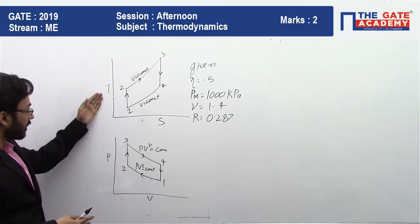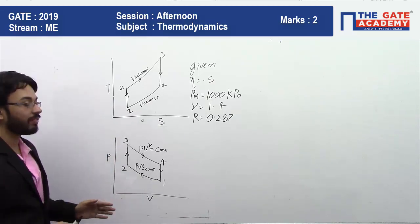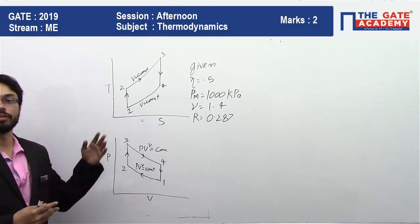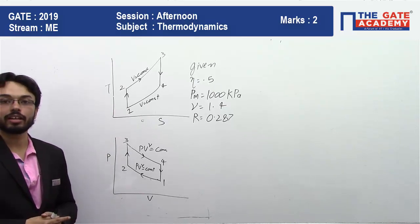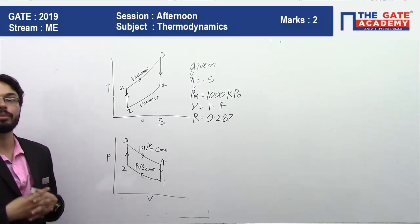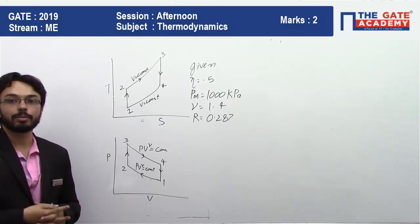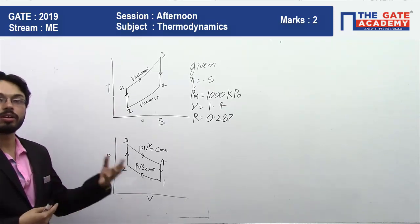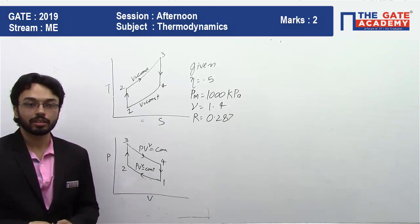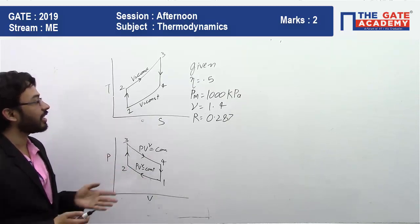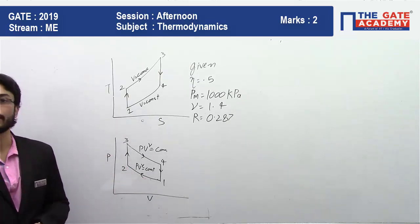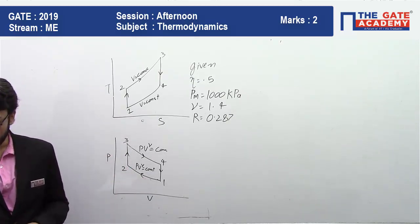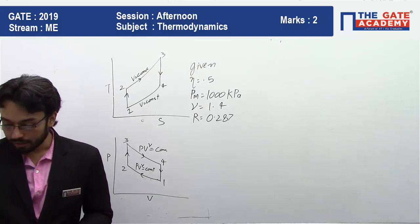To solve this type of question, if you draw the TS diagram and PV diagram together, it becomes very easy to solve because we can clearly see and understand what is happening in the cycle.